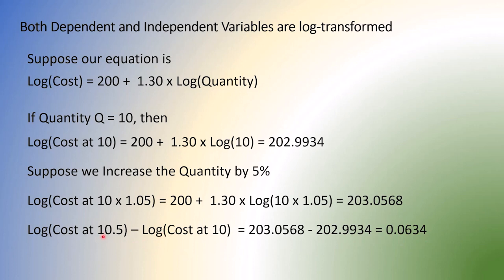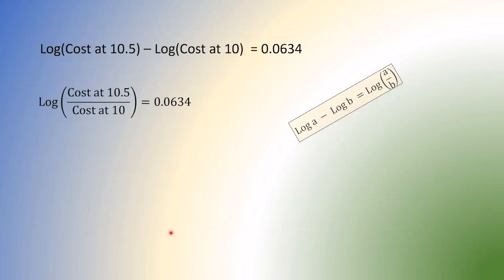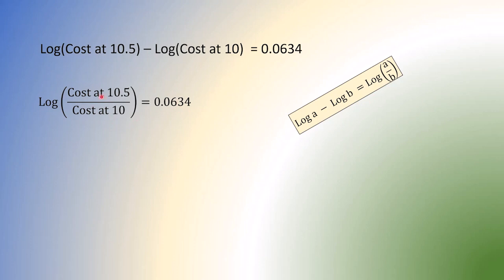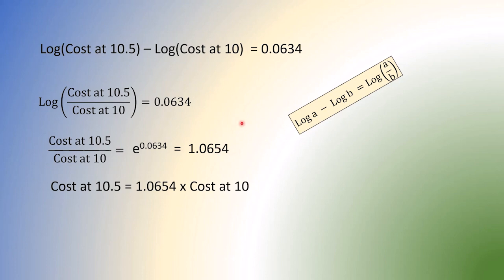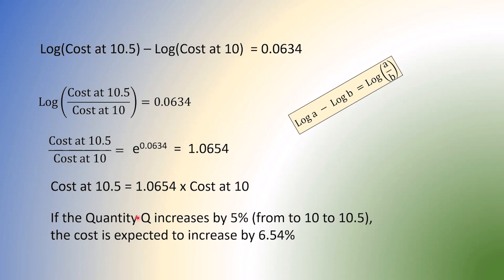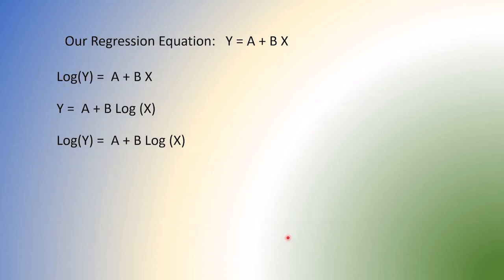And you might guess now what we are going to do is this. Log a minus log b equal to log a over b. So we do this part like this way. And now we do reverse transformation. That will be this over that equal to 1.0654. And this basically tells us that if we increase the quantity by 5%, our cost goes up by 6.54%. There it is. Quantity Q increases by 5%, the cost goes up by 6.54%. And we are done. So we did three kinds of transformation.